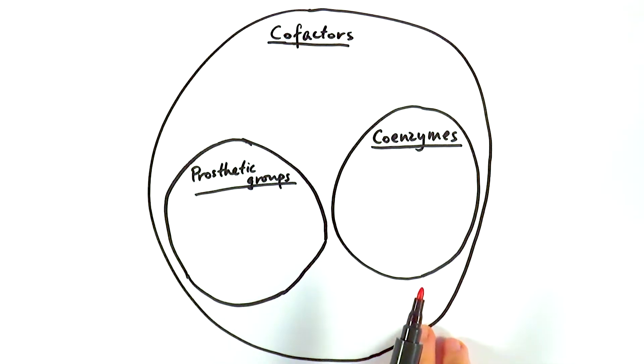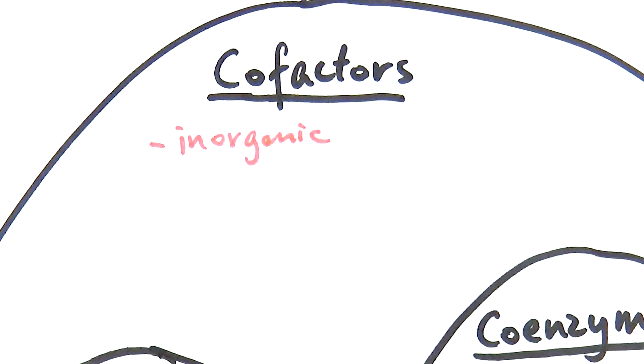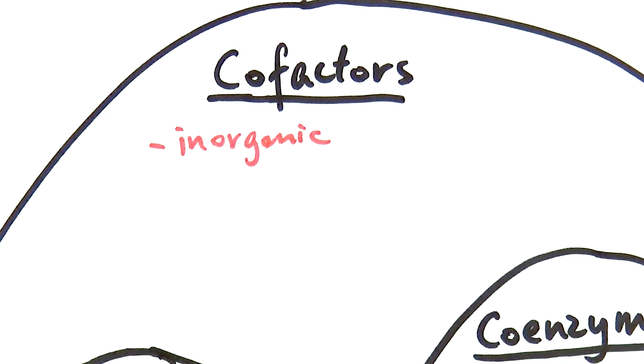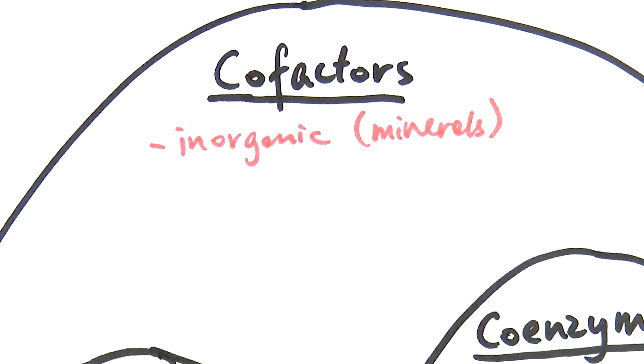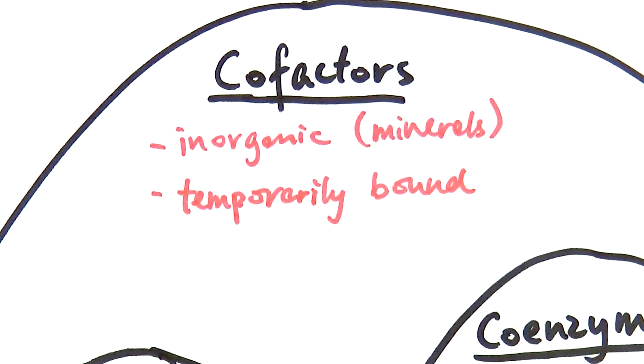I'm going to start with cofactors. First of all, cofactors are generally inorganic. What we mean by that is that they're usually made from mineral ions. Some common mineral ions that you would know would be things like sodium ion, potassium ion, nitrate ions if it's in a plant, etc. Cofactors are ions basically, so they're inorganic. And cofactors are temporarily bound, usually to the actual enzyme.